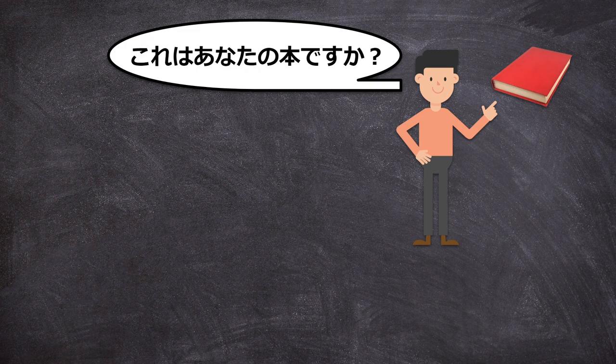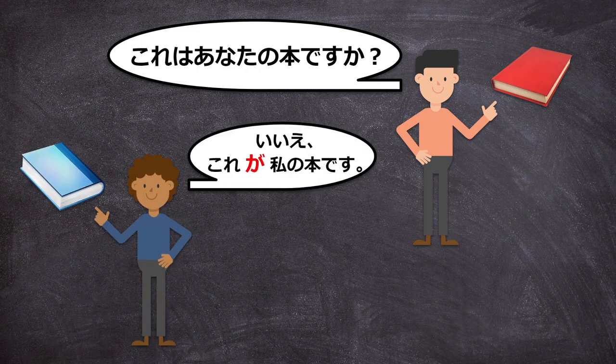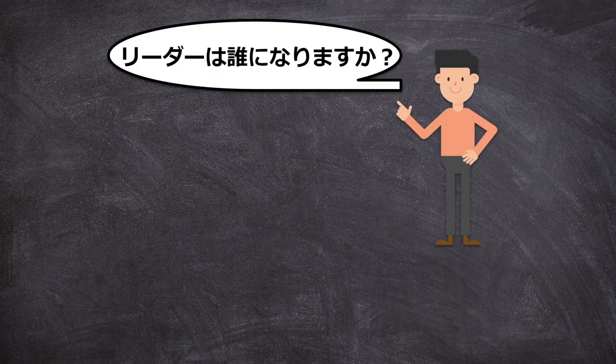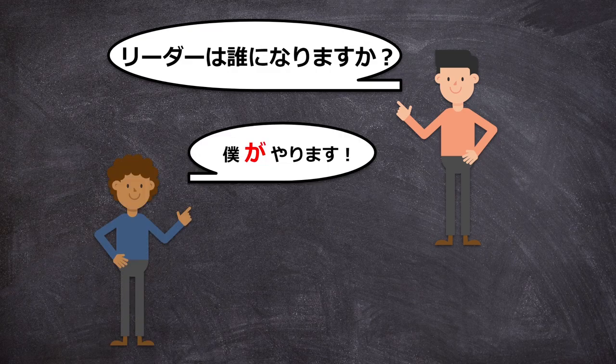But it's not your book and your book is actually the one next to it, you can say: いえ、これが私の本です — No, this is my book — and point to the one next to it. Another example can be when someone is asking who will be the leader of a project — リーダーは誰になりますか? You can say: 僕がやります — I will do it. Using ga as an emphasizer is only one of its usages. What most people don't explain is why we use wa and ga and when we know it's appropriate.